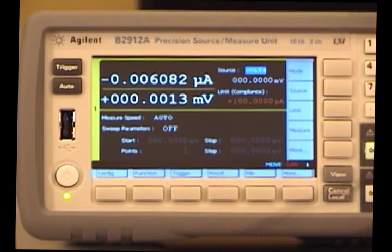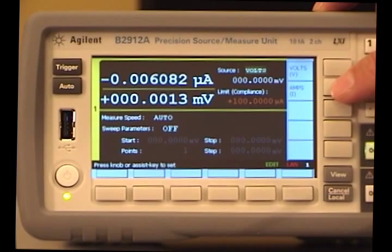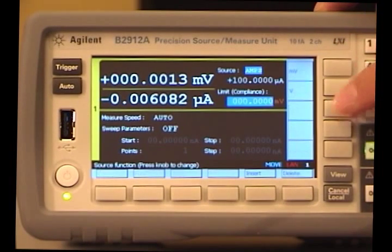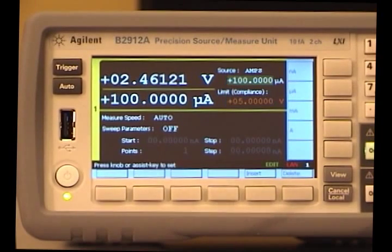First, I will apply a specific current to the LED. So, set the mode to current, set the limit to 5V, and set the source to 10mA.